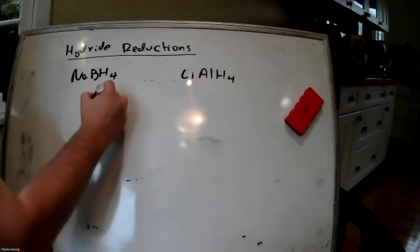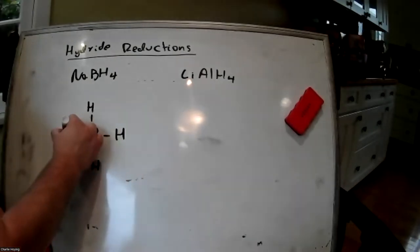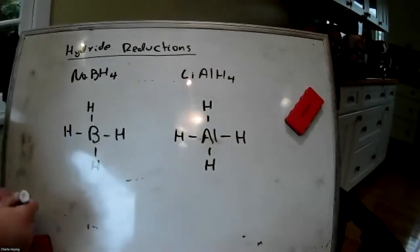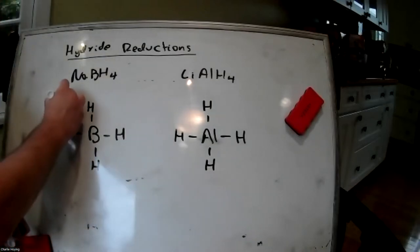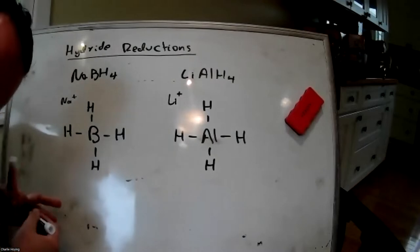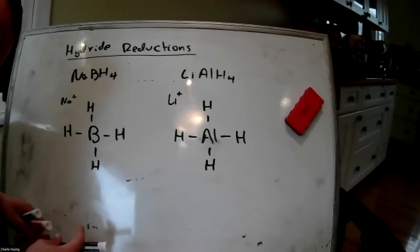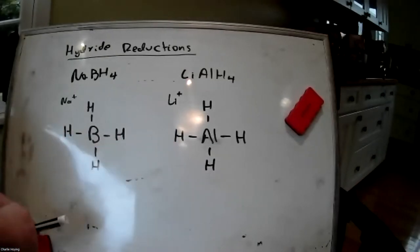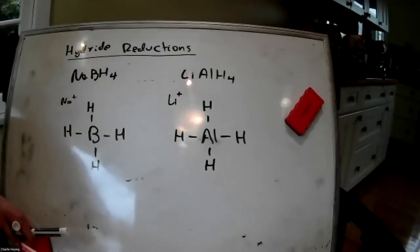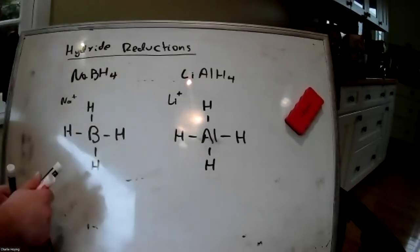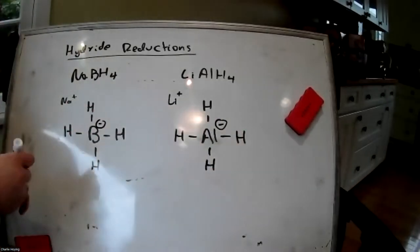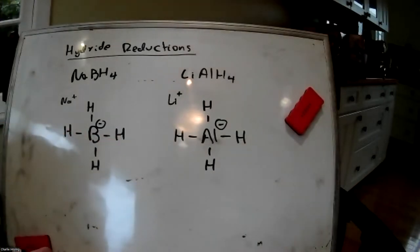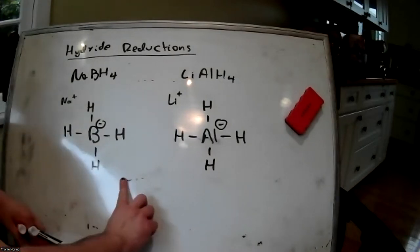So if we draw out our structures here — how many bonds do boron and aluminum prefer to make? They like to have three bonds. Because these have a valence number of three but they're currently making four bonds, boron and aluminum are going to have a minus one charge. These guys aren't really happy. They are willing to give up not only an H, but they're willing to let the H take the electrons with it so that they can finally have their three bonds.